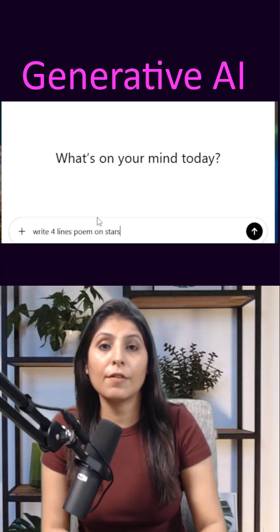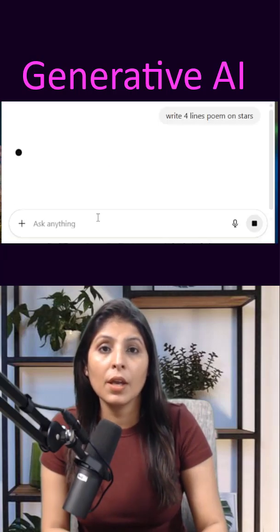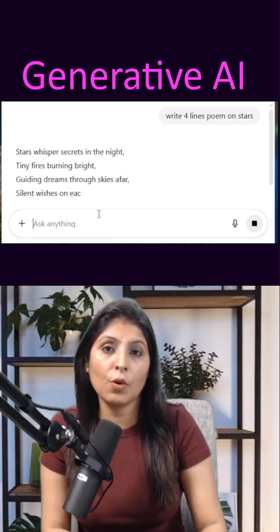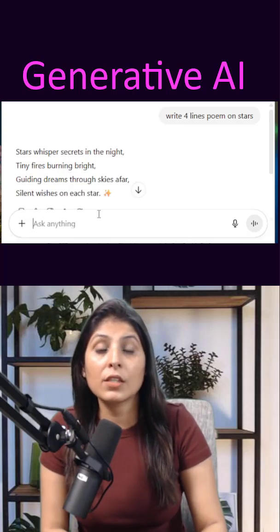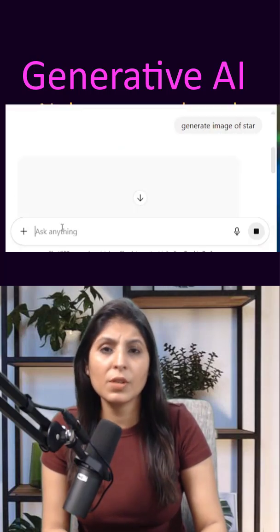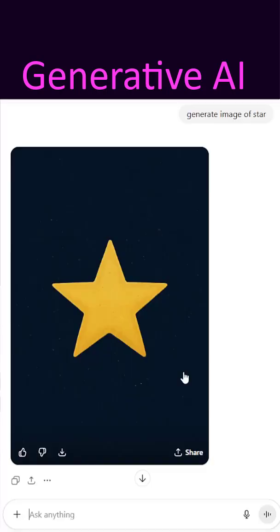For example, if you ask it to write a poem, it will create a completely new poem for you. And if you ask it to generate an image based on some description, then it will create the image from scratch which matches that description.